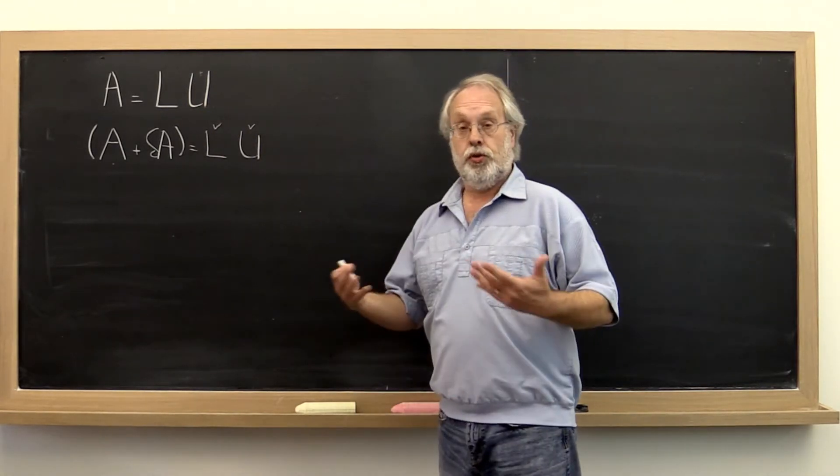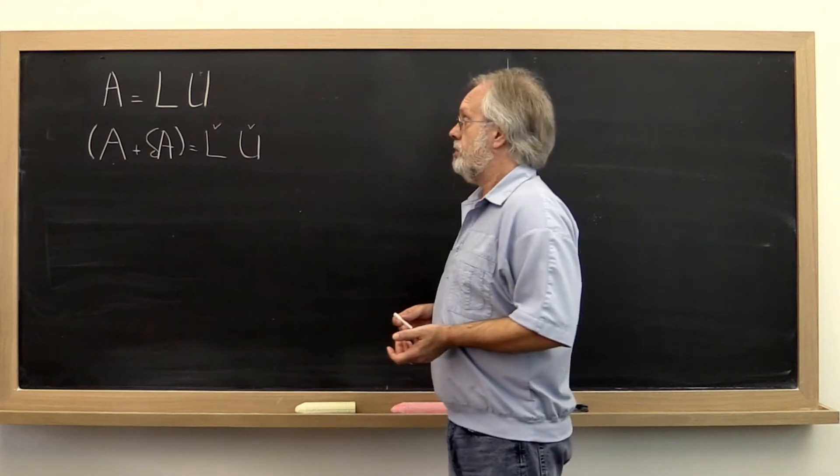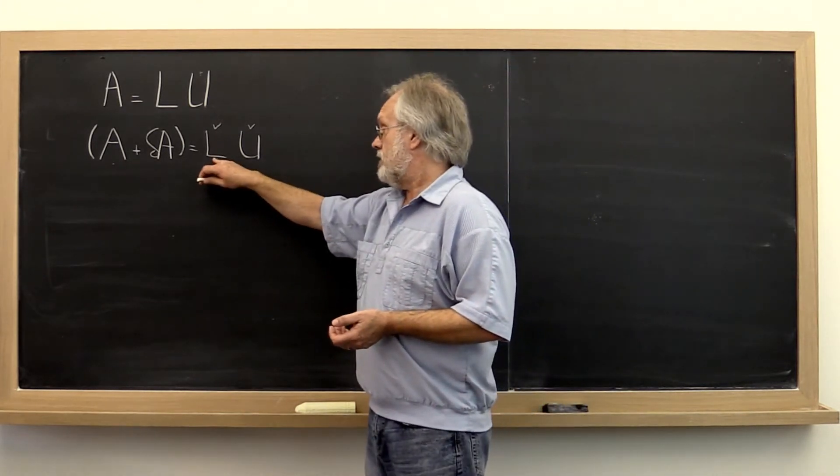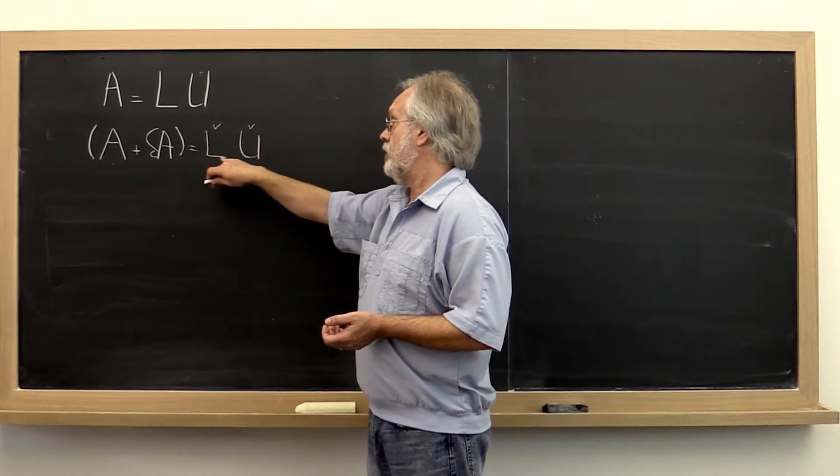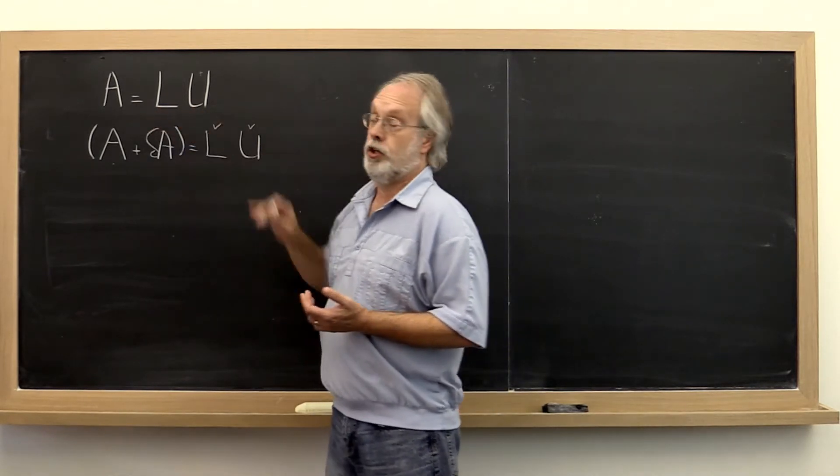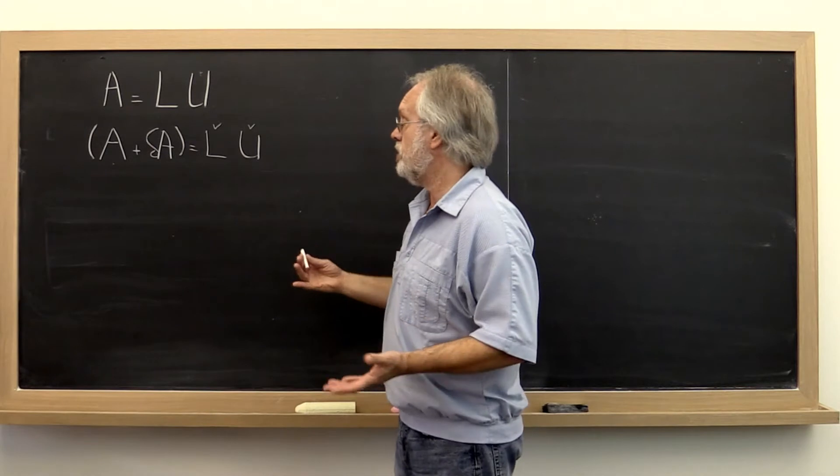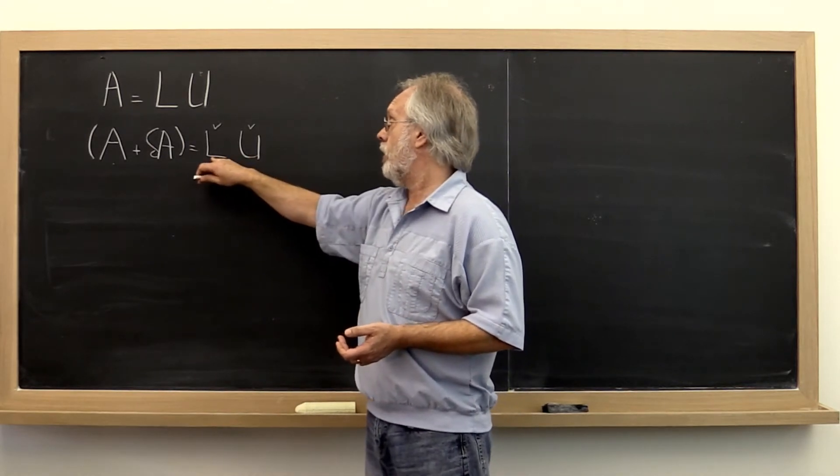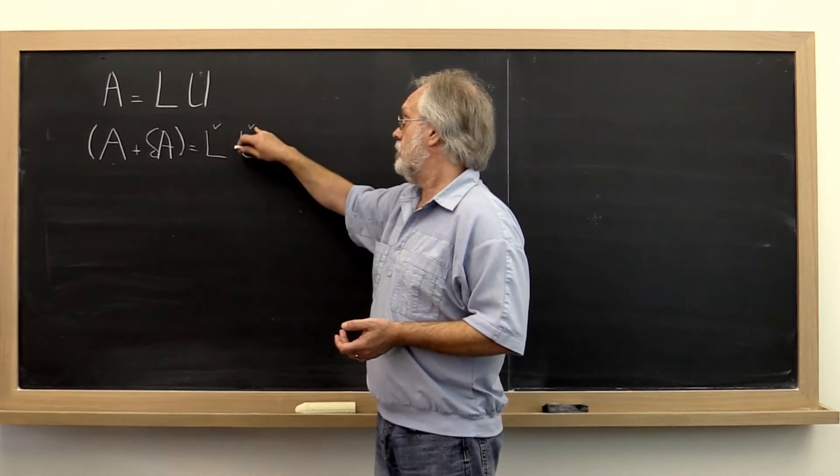When we compute on a computer with a given algorithm, we know that we instead compute an L and U that are approximations to the actual L and U that we want. So the computed L and U we're going to call L check and U check.